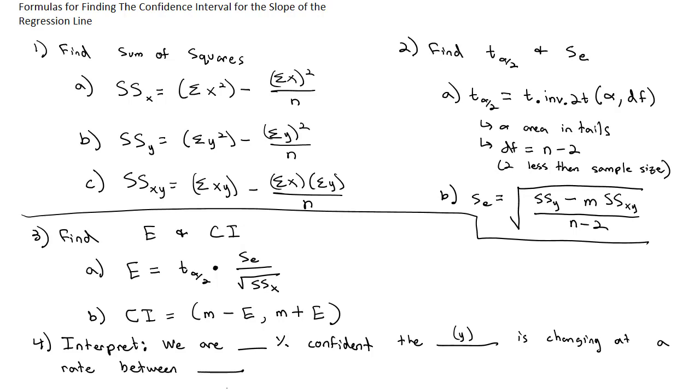That the y variable is changing at a rate between the low number and the top number from our confidence interval, changing at a rate between this number and that number per x that we get, in context.